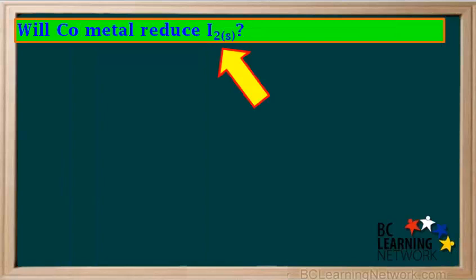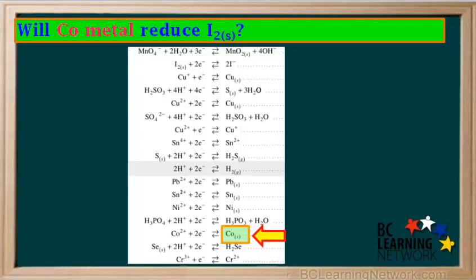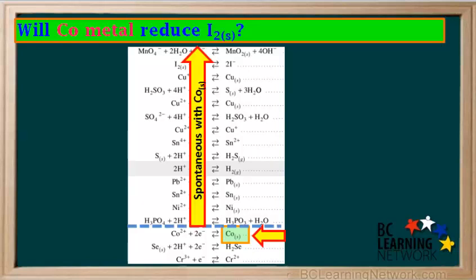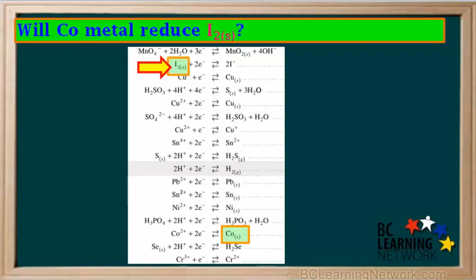Here's another question: Will Co metal reduce I2 solid? Co metal is on the right side of the table, and it will spontaneously reduce anything on the left side above it. Iodine, I2 solid, is above it on the left. Drawing a diagonal between Co and I2 gives a backslash, so this reaction is spontaneous — Co metal will reduce I2 solid.